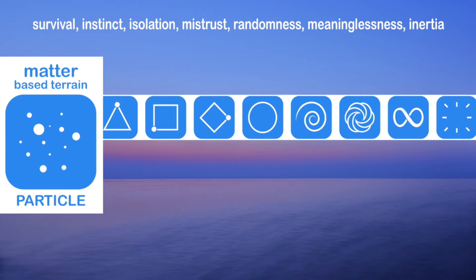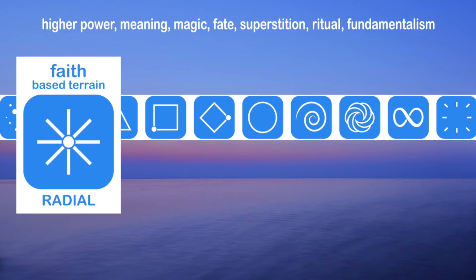Nutshell, the first one, matter-based terrain particles. Think of cavemen coming from fear in every moment. Faith-based terrain radial. Think of a fundamentalist who's given all their power to a god or deity outside of themselves and obeys them to the law.